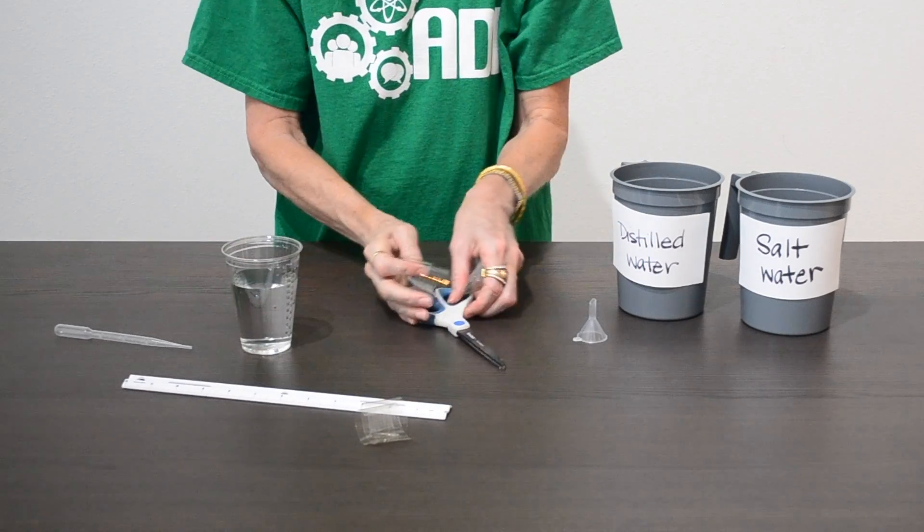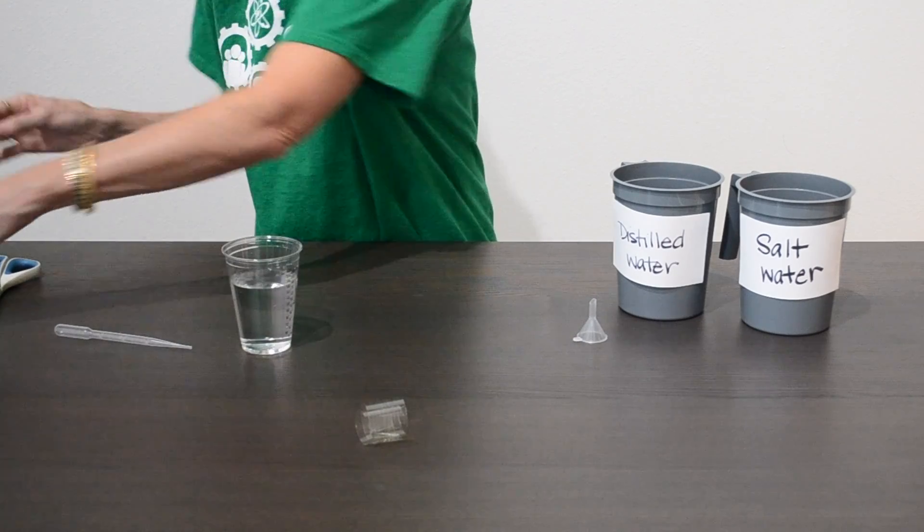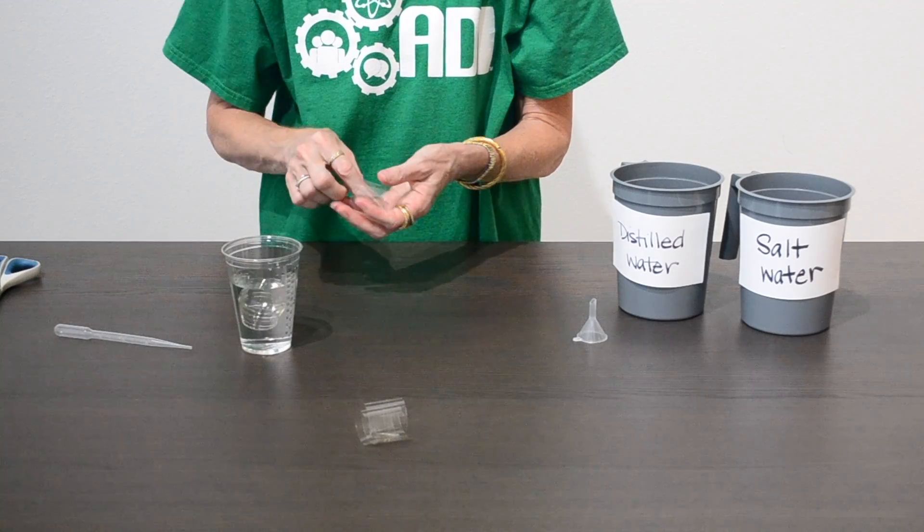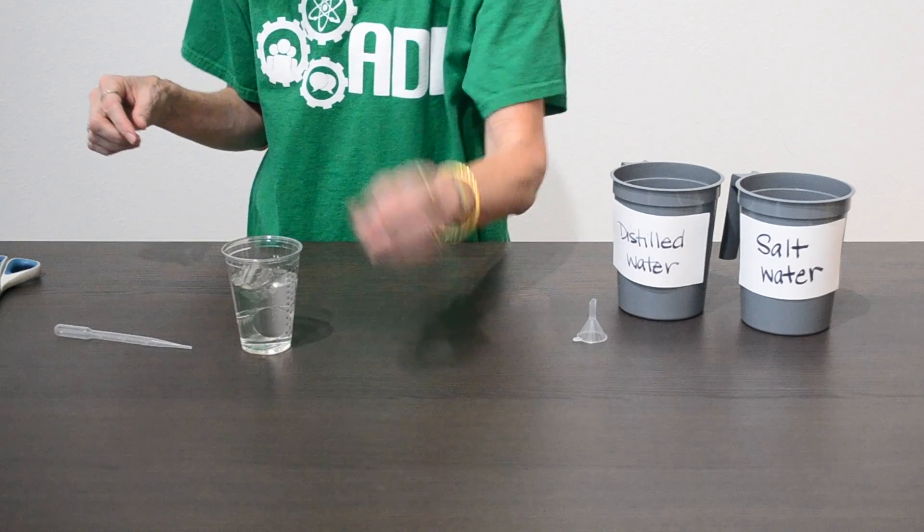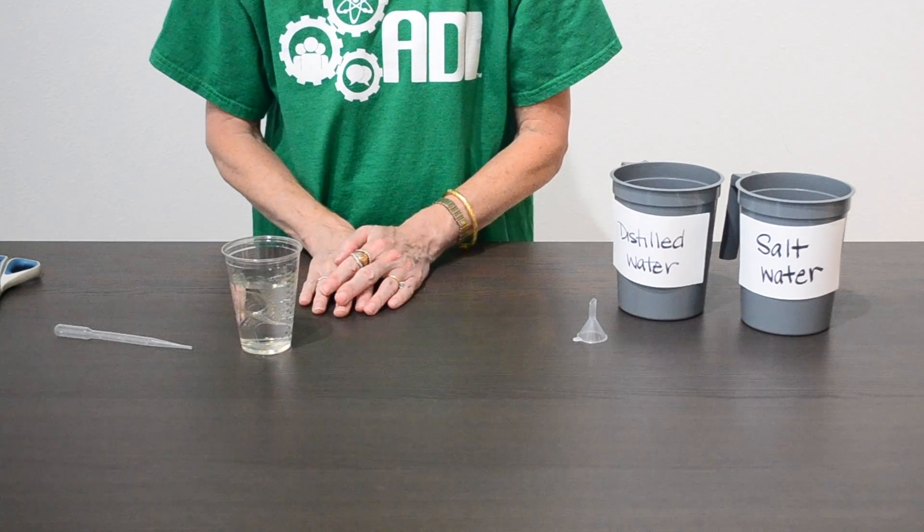Once you've got those three pieces, to be able to work with the dialysis tubing we need to soak it in some distilled water. So we're going to drop it in distilled water, and you're going to leave it there for about ten minutes.